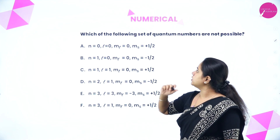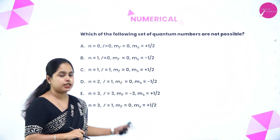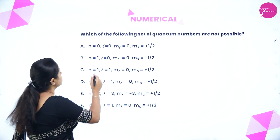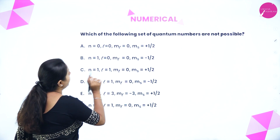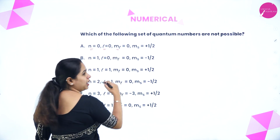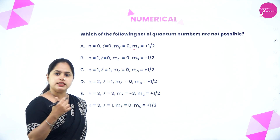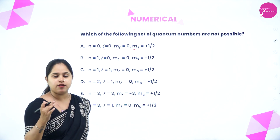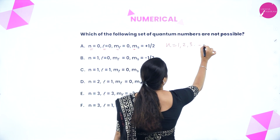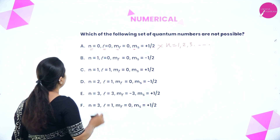Fourth question: Which of the following sets of quantum numbers are not possible? (A) n=0, l=0, ML=0, MS=+½ — not possible because n starts from 1. (B) n=1, l=0, ML=0, MS=+½ — possible, as l can only be 0 when n=1, and ML=0 is valid.